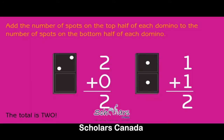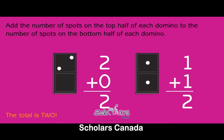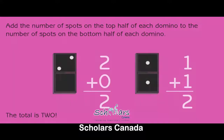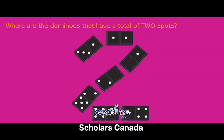Add the number of spots on the top half of each domino to the number of spots on the bottom half. The total is three. Two plus zero equals two. One plus one equals two. Where are the dominoes that have a total of two spots?